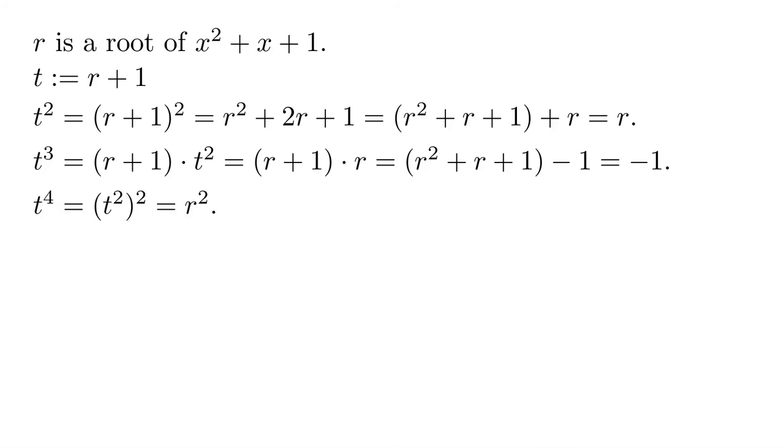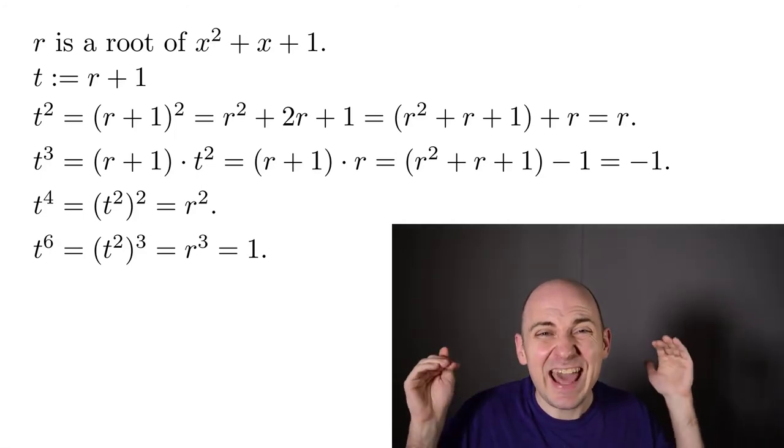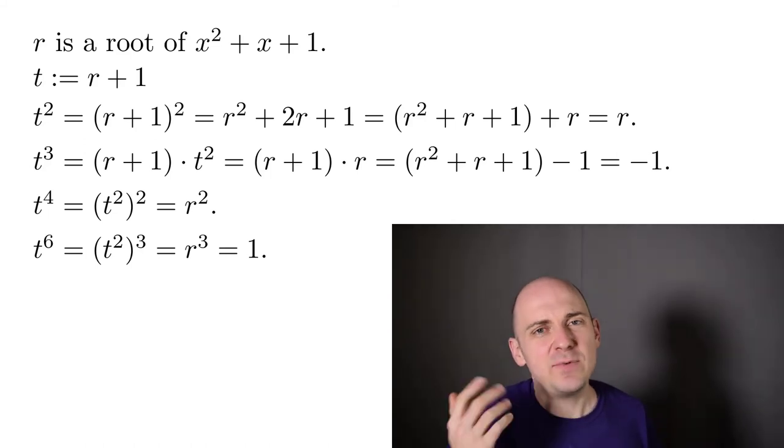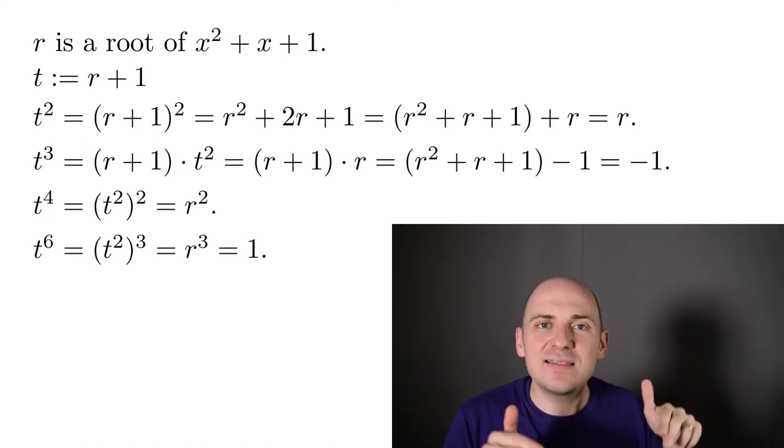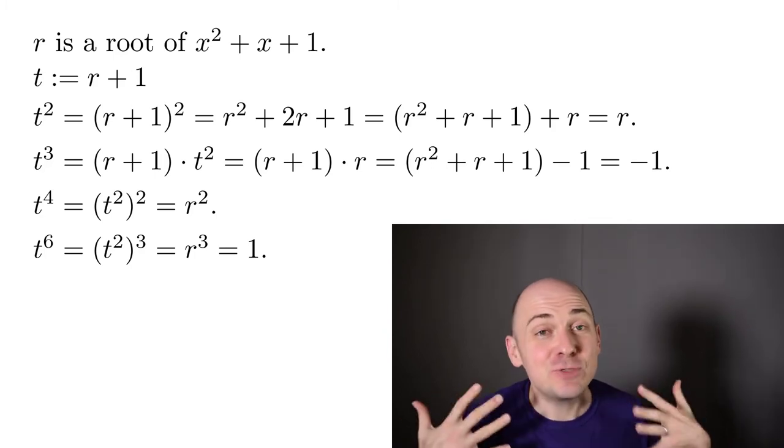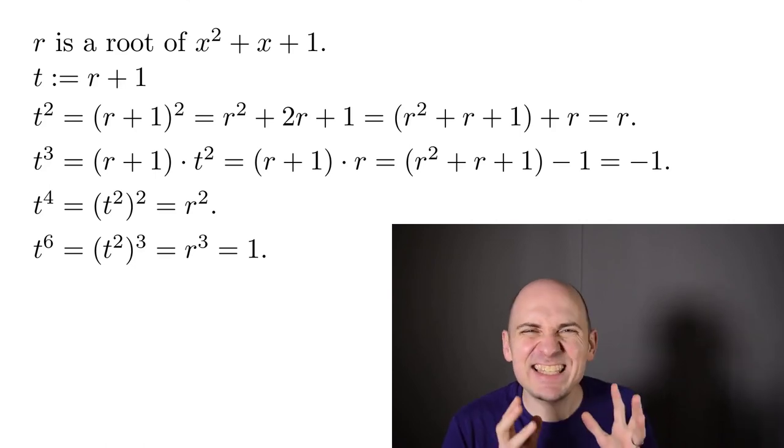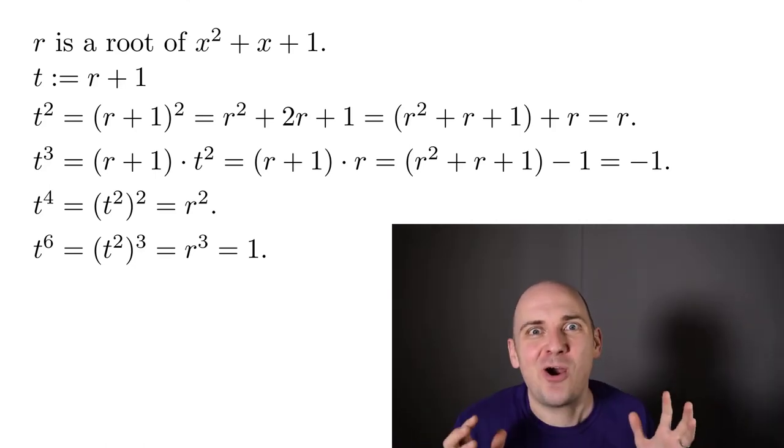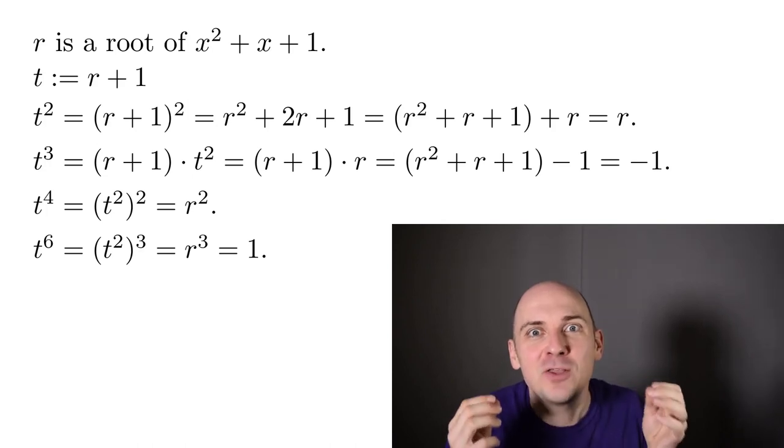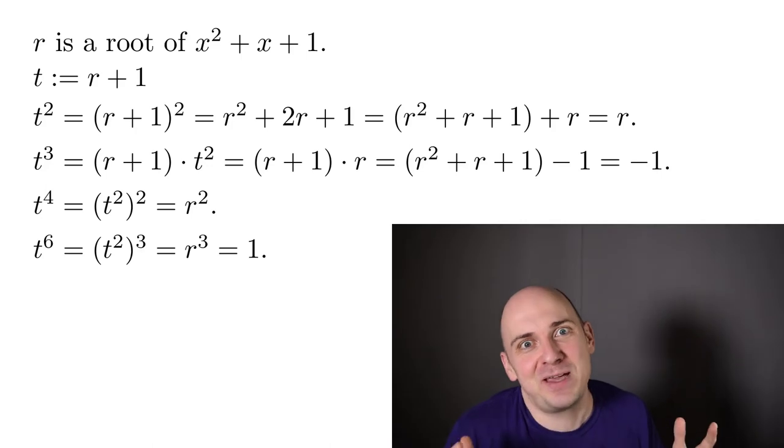Doing some more algebra reveals that t to the fourth is equal to r squared, and that t to the sixth is equal to 1. You may not be very impressed with this computation, but let me remind you, this computation is not happening in the complex plane. This computation is happening in Z mod p. So we made this computation go just by using the fact that r satisfies this polynomial identity, that r squared plus r plus 1 equals 0. And just by using that polynomial identity, we can conclude things like t cubed equals minus 1. And that's the sense in which this is an algebraic argument. We're using the fact that r satisfies certain polynomial identities to deduce certain things, rather than drawing some kind of geometric picture in the complex plane.